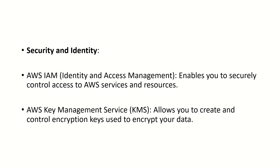Now on the next slide, we have security and identity services. AWS IAM — Identity and Access Management — enables you to securely control access to AWS services and resources. When you create your account, you can find this option where you can see AWS IAM and root users. The AWS Key Management Service allows you to create and control encryption keys used to encrypt your data.